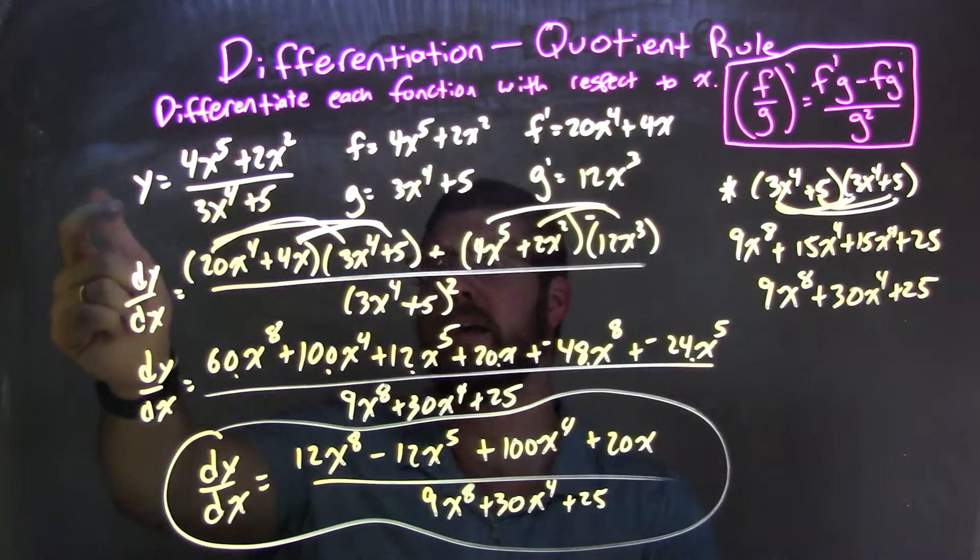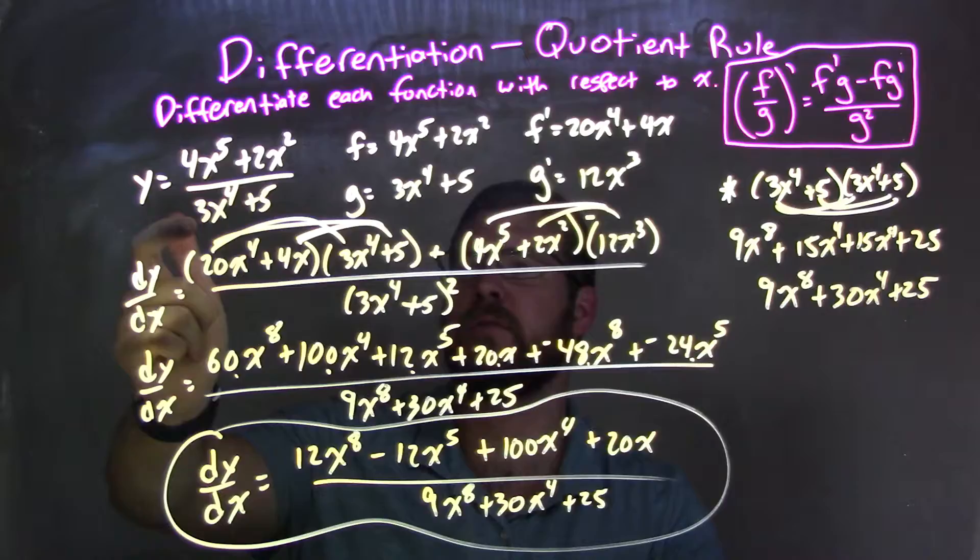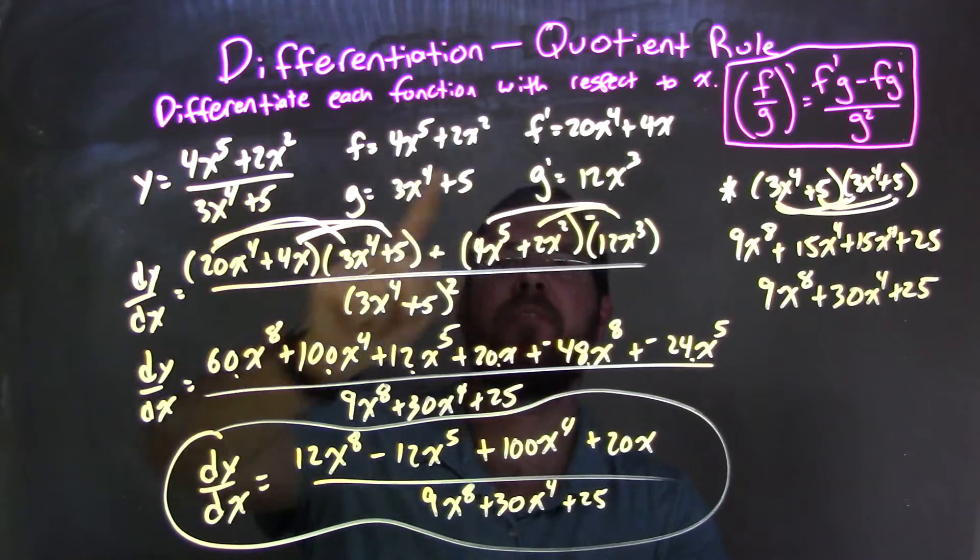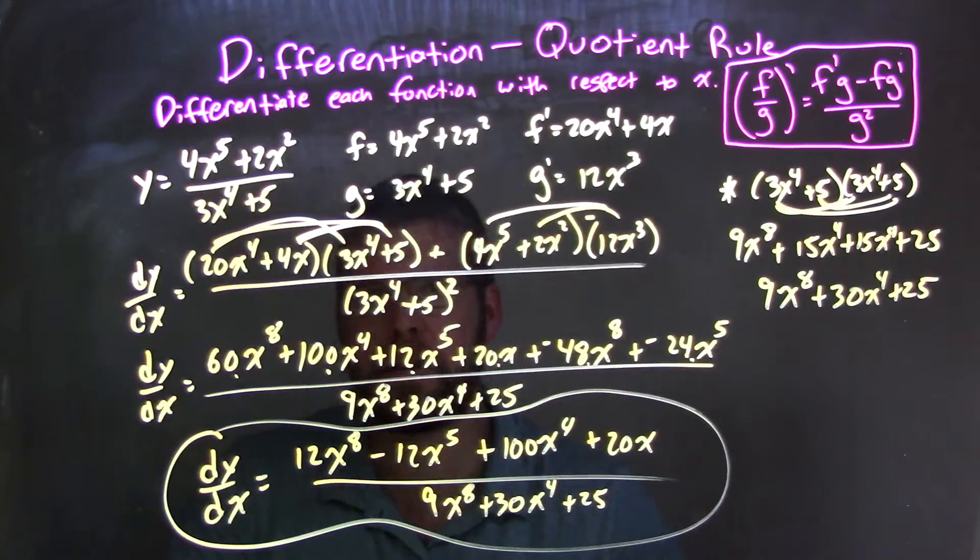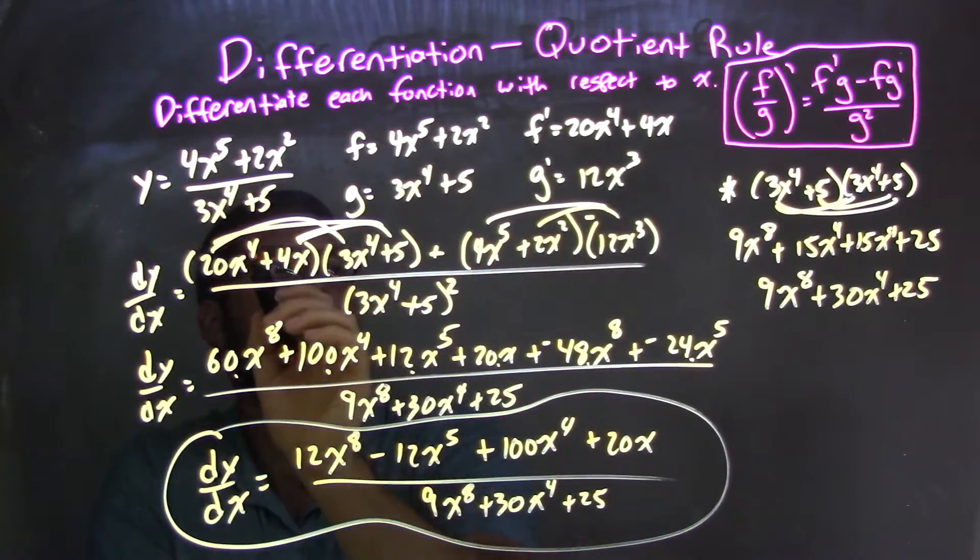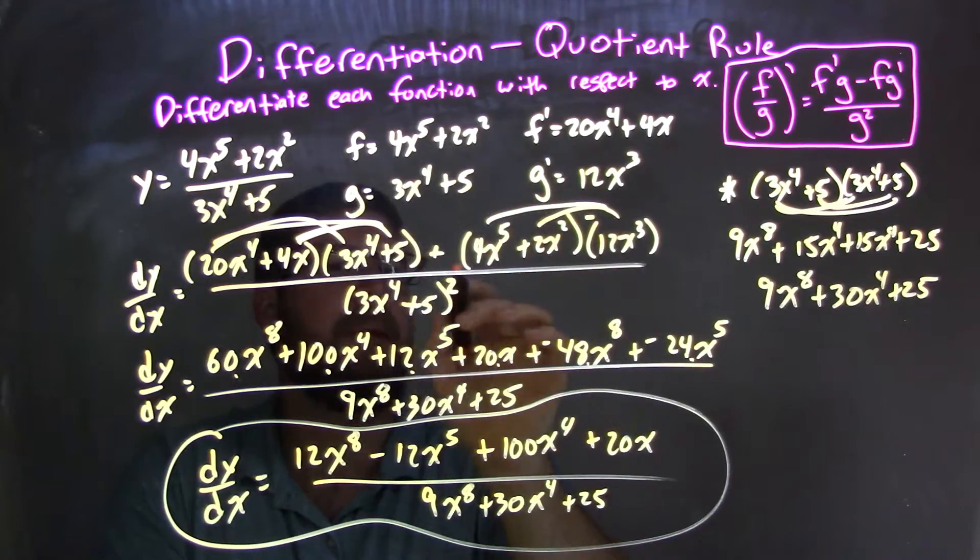So let's recap. We're given our function y equals 4x to the fifth plus 2x squared over 3x to the fourth plus 5. I wrote my numerator to be f, the denominator to be g, and I found f prime and g prime, respectively. I then applied the quotient rule here, once I had all my missing pieces, and I had f prime times g minus f times g prime all over g squared.